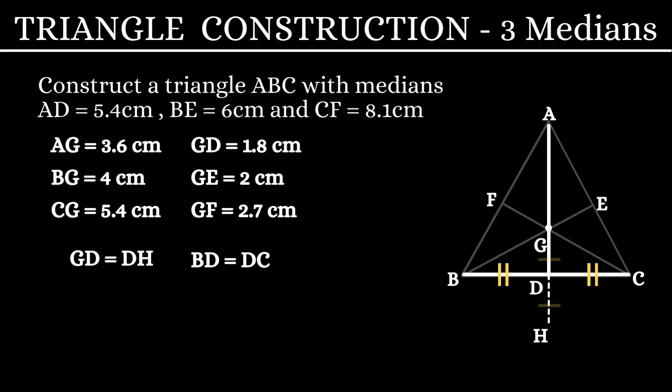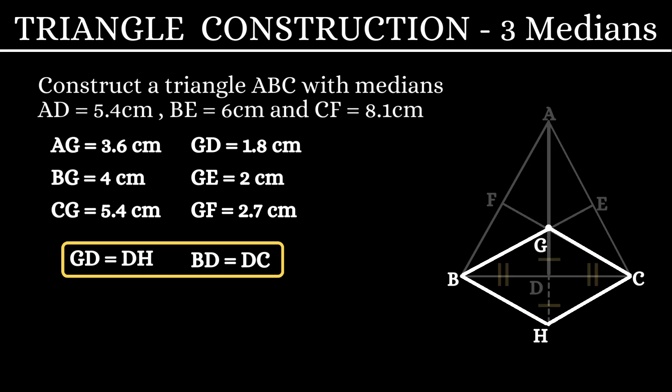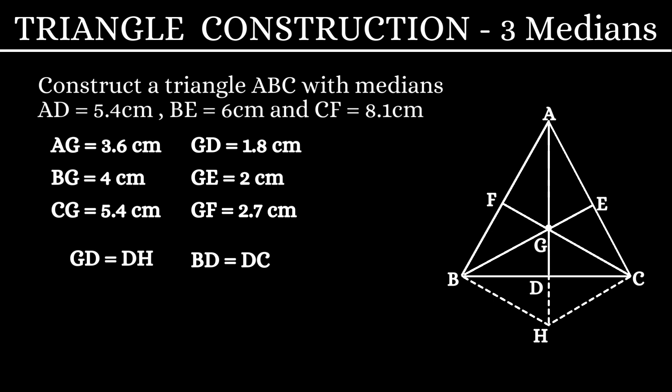Now, if you join BH and HC, then BC and GH will become diagonals of this quadrilateral. Since the two diagonals are bisecting each other, we can say that this quadrilateral is a parallelogram. Now, let us slightly tilt this figure.